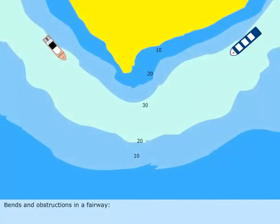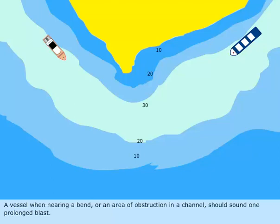Bends and obstructions in a fairway. A vessel, when nearing a bend or an area of obstruction in a channel, should sound one prolonged blast. Any approaching vessel within the hearing range should answer the signal with another prolonged blast.